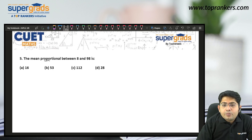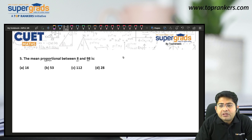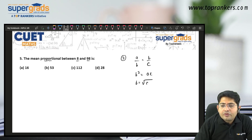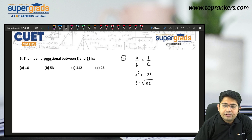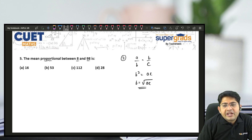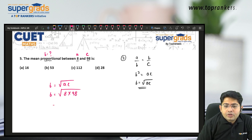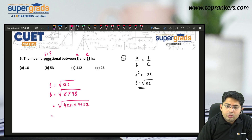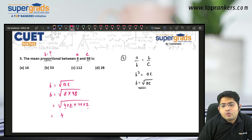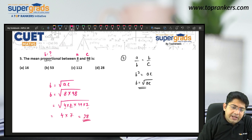Next: the mean proportional between 8 and 98. When three quantities are in proportion — A upon B equals B upon C — B is the mean proportion, so B squared equals AC, meaning B equals the square root of AC. Here we have to find B, the mean proportional of 8 and 98. So B equals the square root of 8 into 98. Writing 8 as 4 into 2 and 98 as 49 into 2, we get square root of 4 is 2, square root of 49 is 7, and 2 into 2 into 7 gives B equals 28 — option D.